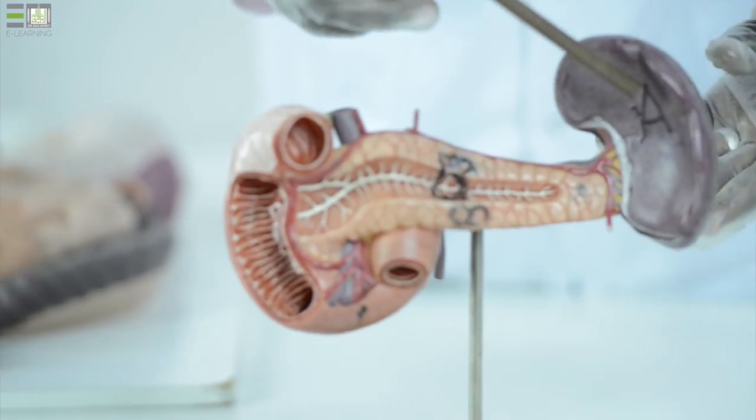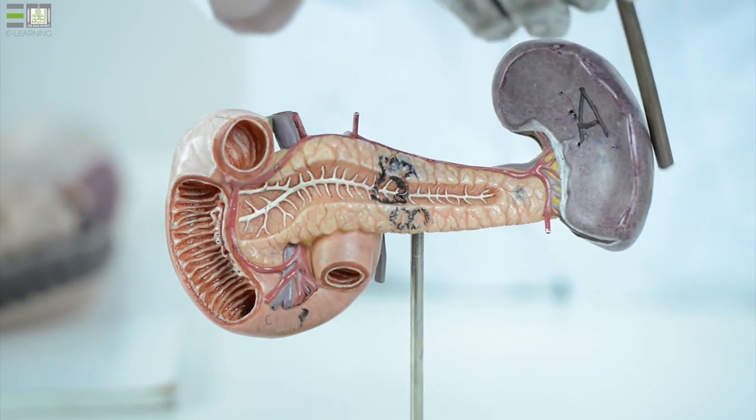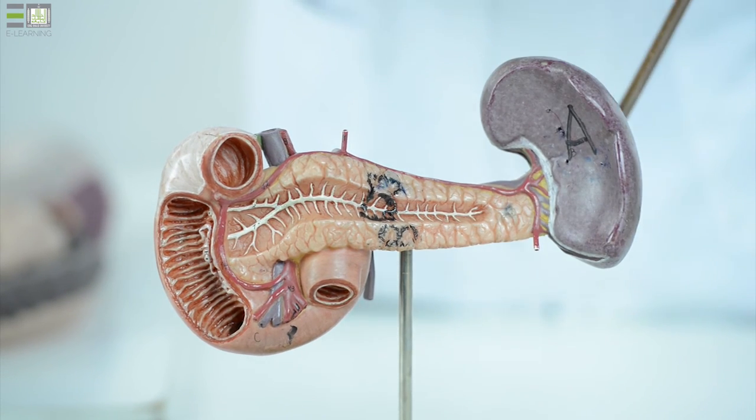The spleen, which lies in the upper left quadrant of the abdomen, has an outer surface, inner surface, superior border, and inferior border.